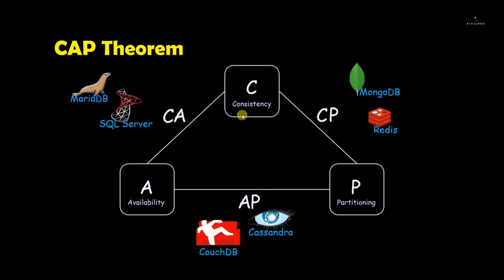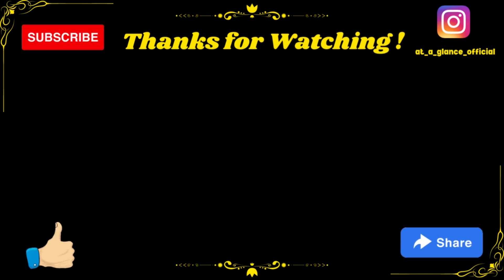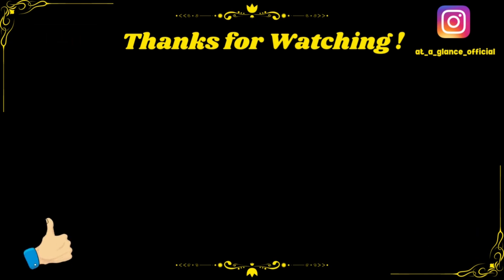The CAP theorem conveys that partitioning will always be present inside a network shared system, but there will always be a trade-off between consistency and availability. Data models will have to compromise on any one of them, and no data model will have all three properties at the same time. If you have any doubts, put them in the comment section, and for more such videos do like, share, and subscribe to my channel, hit the bell icon, and don't forget to follow me on Instagram. Thanks for watching.